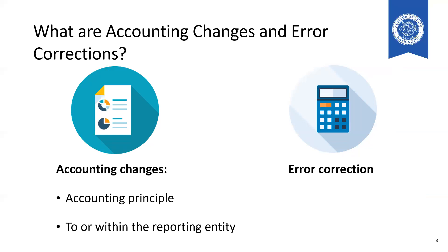Let's start with sharing what the accounting changes are that this new accounting will cover. The two that this impacts are changes in accounting principle and changes to or within the financial reporting entity. Error corrections are also covered in this new accounting and reporting, though they are in their own category.